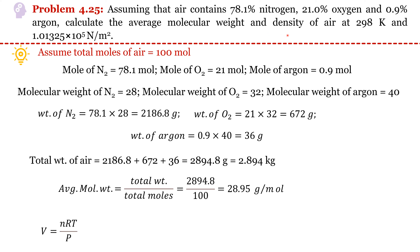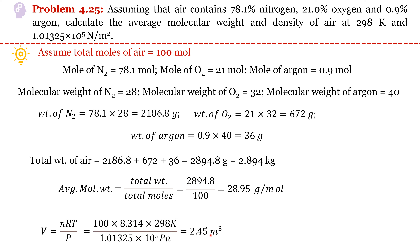In the next part, we estimate the density of air. Density equals mass per unit volume. Mass has already been estimated. To find volume, we use the ideal gas law: V = nRT/P. Substituting all values, volume comes out as 2.45 m³. Therefore, density comes out as 1.1812 kg/m³.